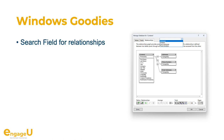For Windows we got a few improvements, like a search field for relationships on Windows as well as for Mac, and you can use Ctrl+F to find and Ctrl+G to find the next one.